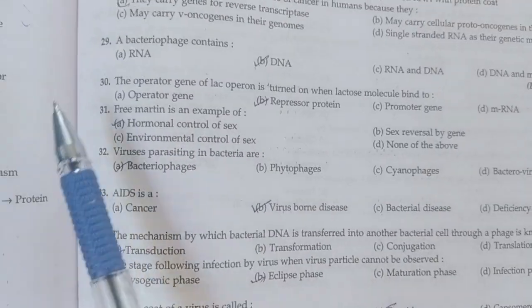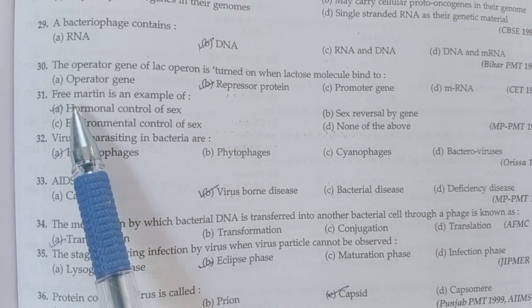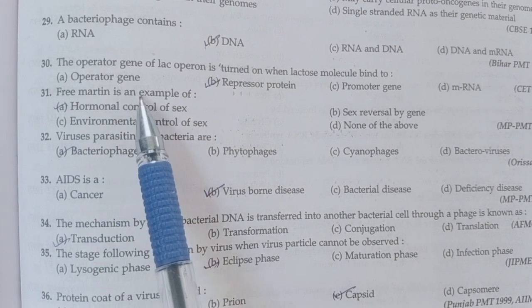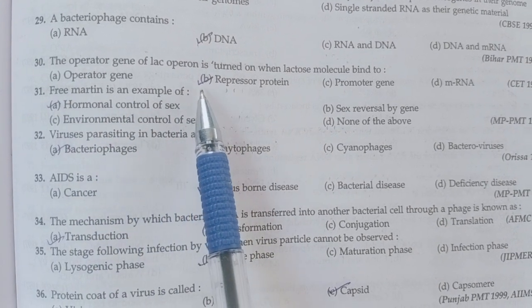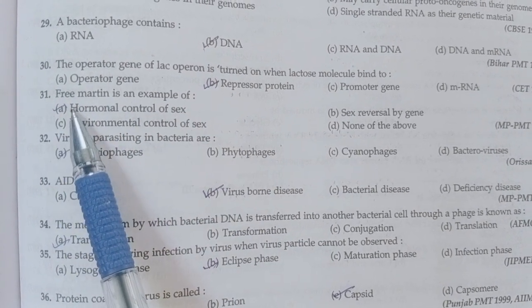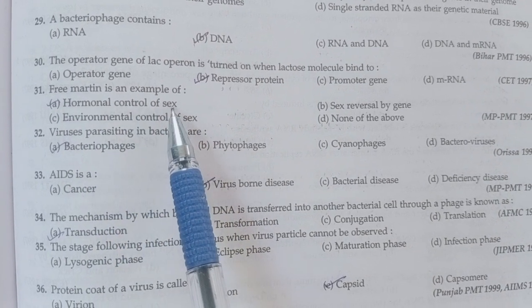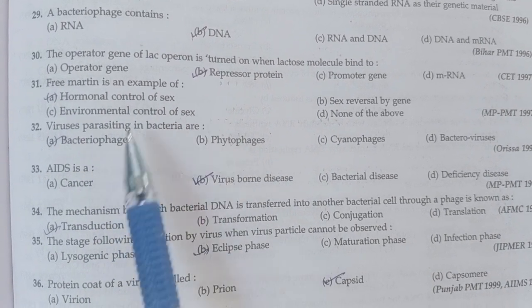Question 31: Freemartin is an example of — option A is correct, that is hormonal control of sex.